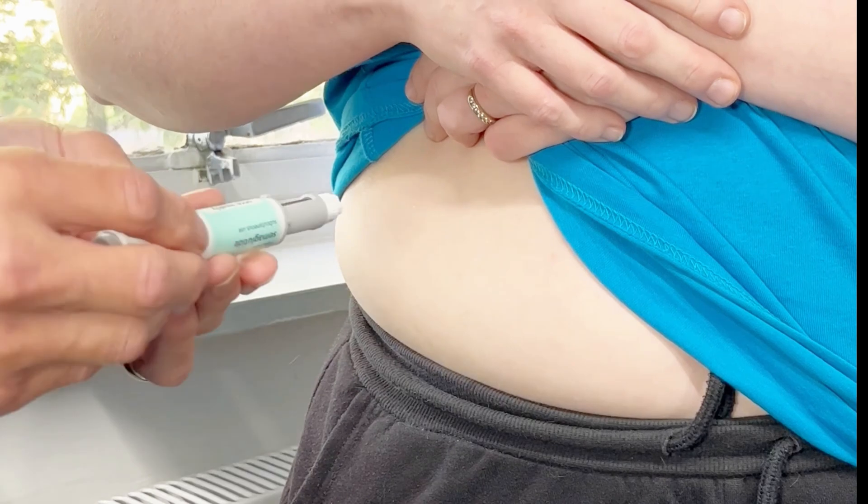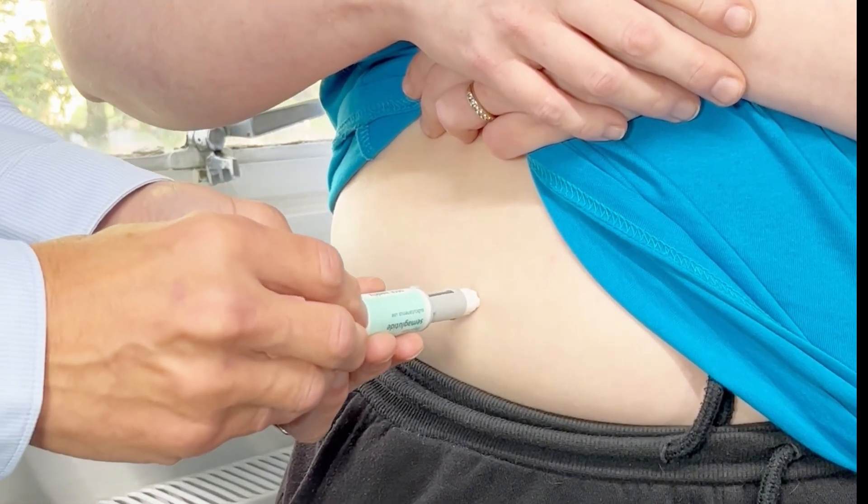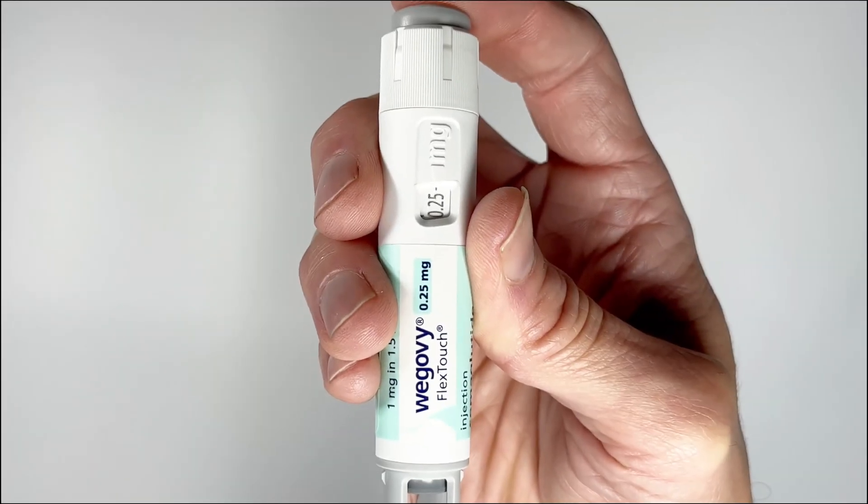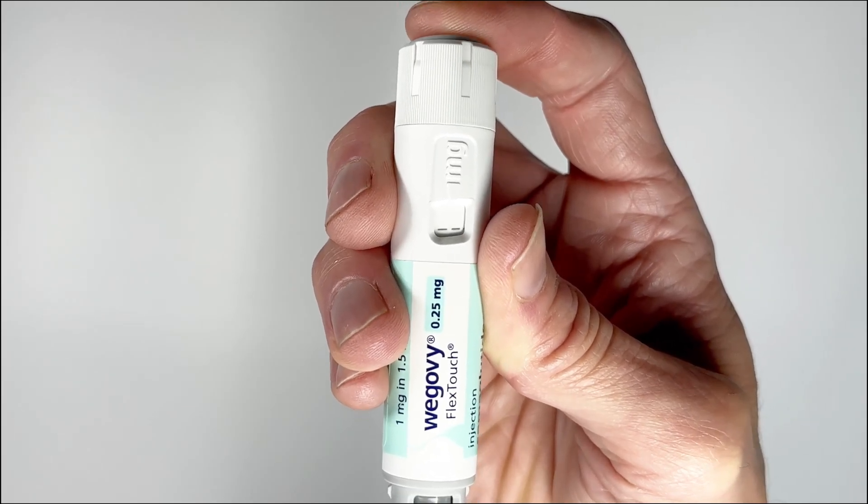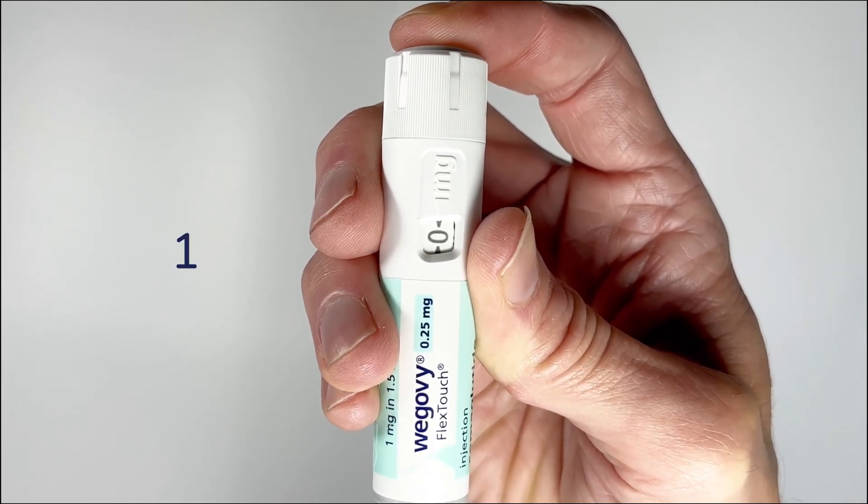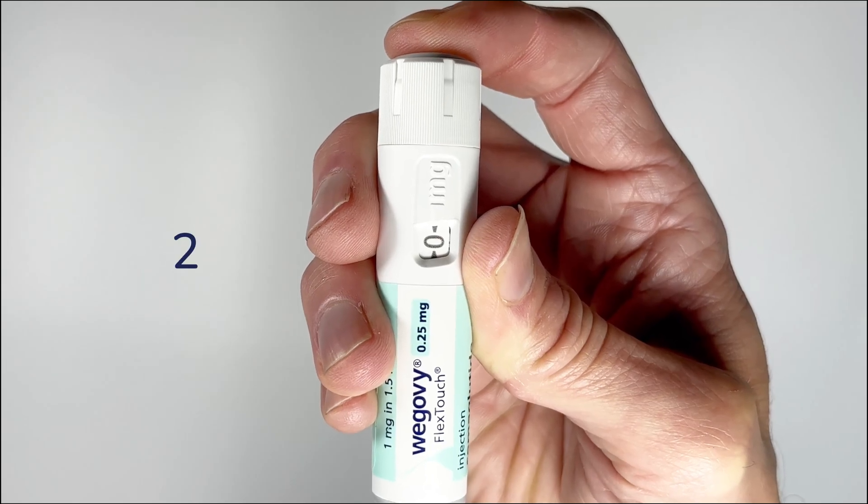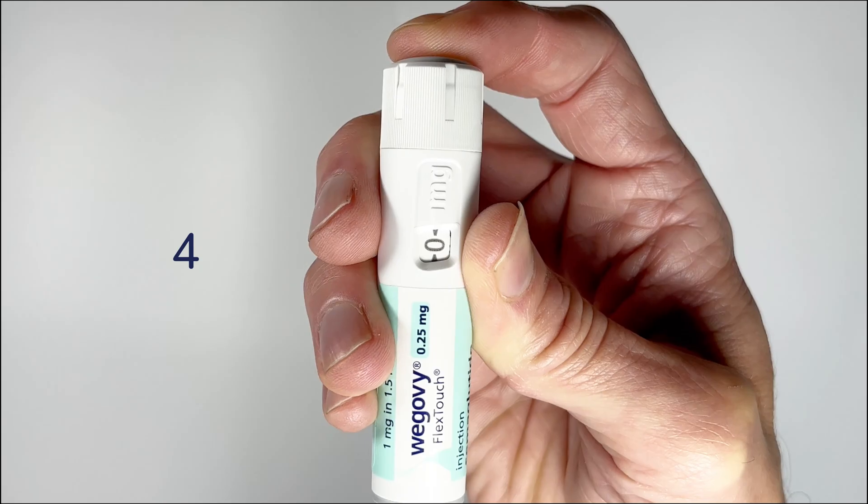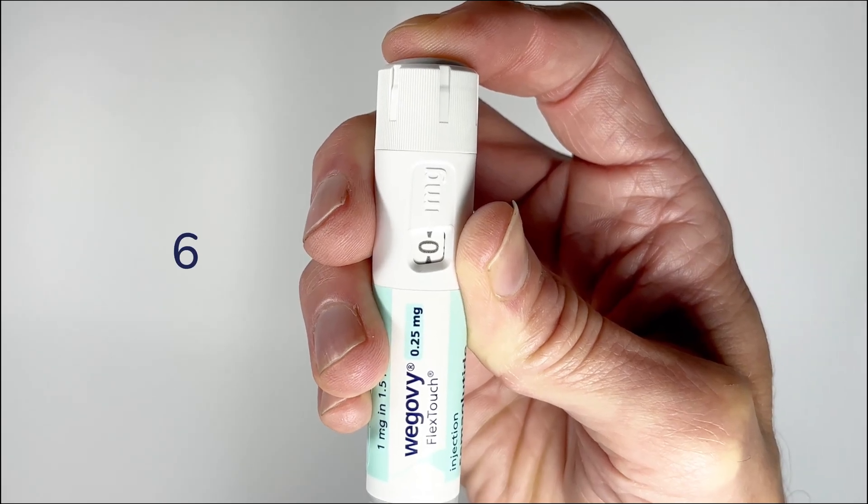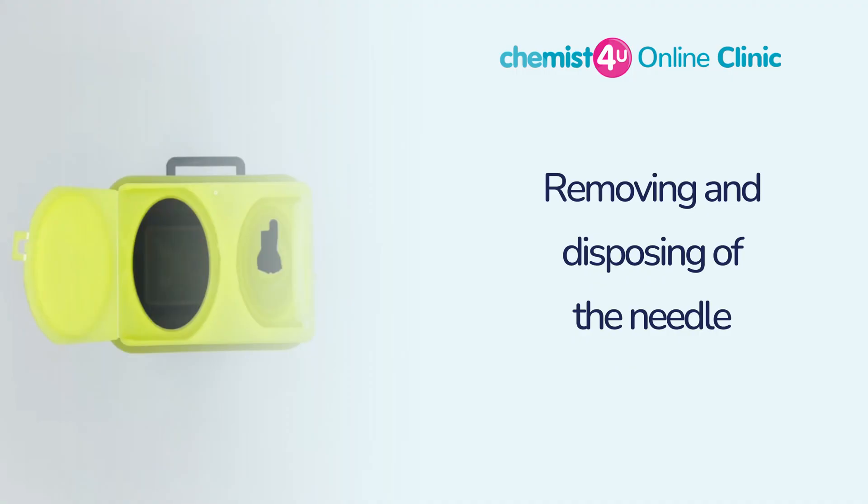When you are ready to inject, insert the needle into the skin. Make sure you can see the dose counter. Press and hold the dose button until the dose selector says zero and you hear a click. Continue to hold the dose button in and count to six to make sure the dose is fully delivered. Then carefully remove the needle from the skin and prepare to dispose of the needle.